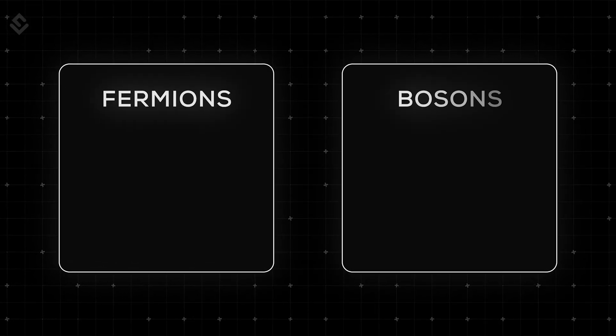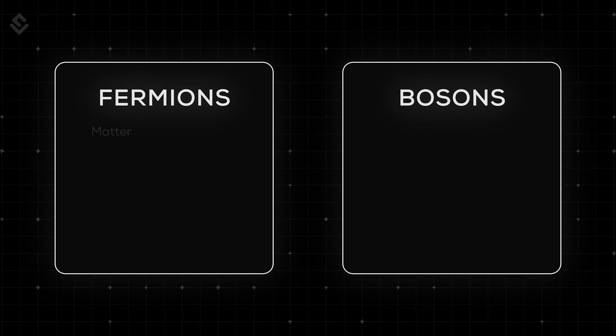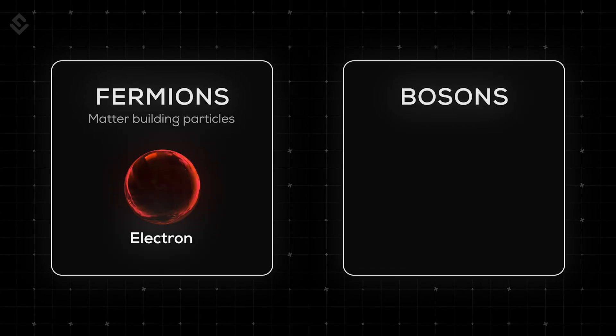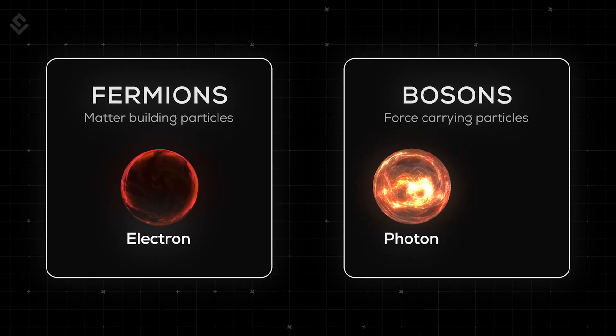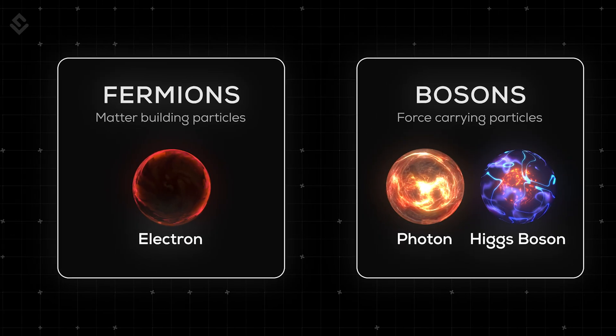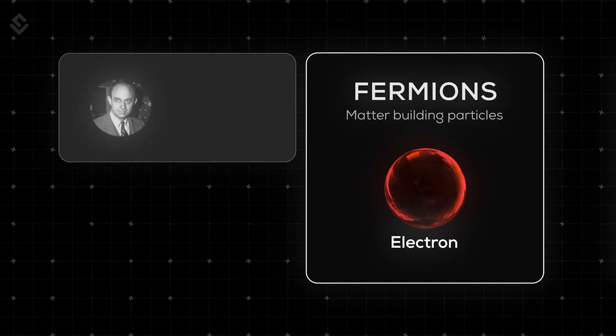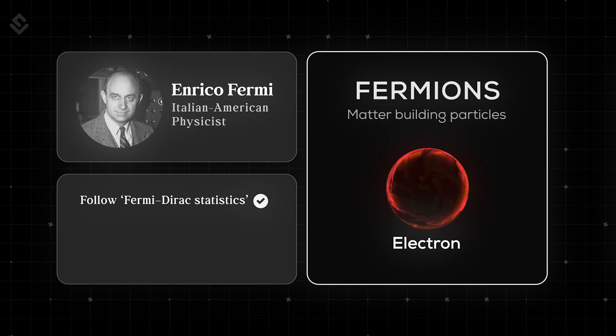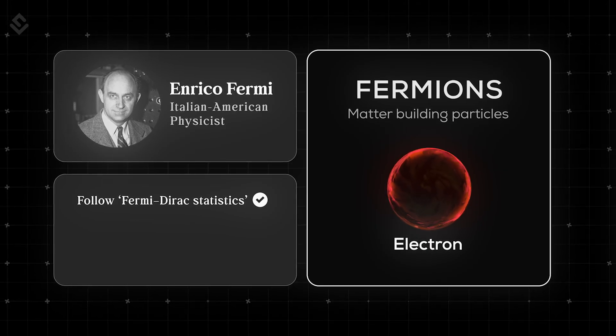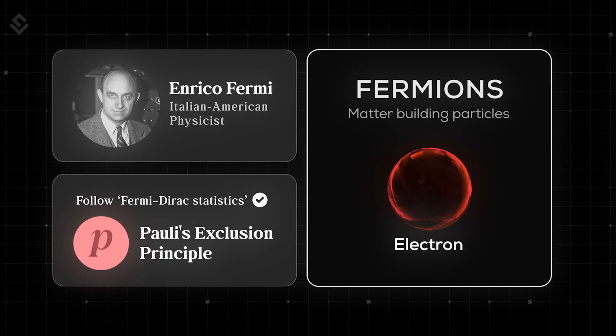At the quantum level, the particles can be classified into two categories: fermions and bosons. Fermions are the matter-building particles such as electrons and bosons are the force-carrying particles such as photons or the famous Higgs boson. Fermions got the name from the physicist Enrico Fermi and they are a collection of particles that follow the Fermi-Dirac statistics, which basically means the particles that follow the Pauli Exclusion Principle.